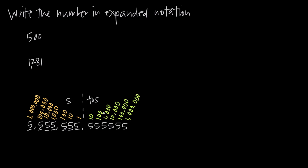Remember that every value to the right of the decimal place represents a fraction. So because this five is in the tenths place, it represents five tenths, which is the same as one half. We have a five in the hundredths place, which is the same as five over 100, which is of course just one over 20. And you keep going — a five in the thousandths place, a five in the ten-thousandths place, et cetera. Those are all fractions.